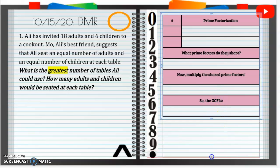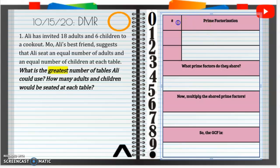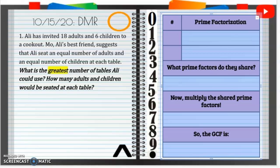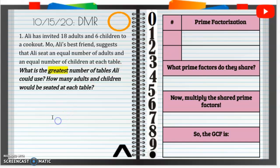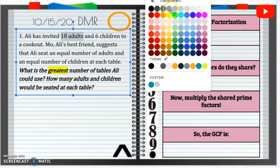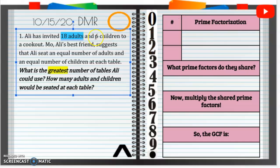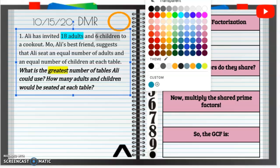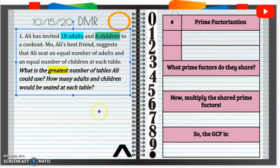Let's go ahead and we are going to take a look at the greatest common factor. I'm going to make this table a little bit bigger for us. Alright, so greatest common factor. Well, what are we going to find the greatest common factor of? We've got 18 adults, so I'm going to put 18 adults and highlight that in blue. And then we have 6 children. So we're going to find that greatest common factor. I'm going to put that in green.